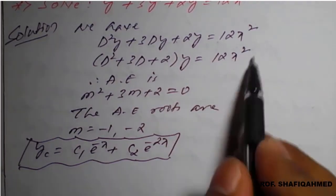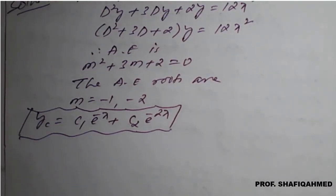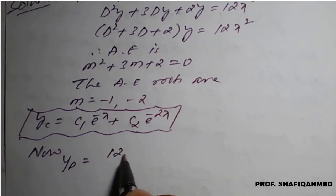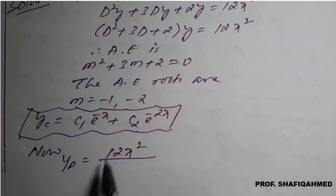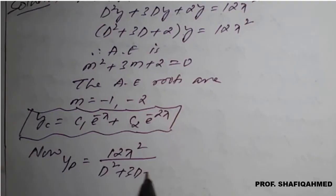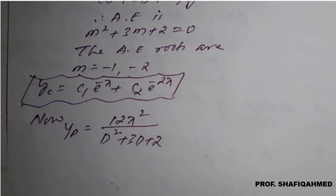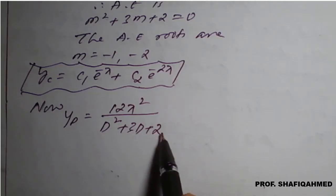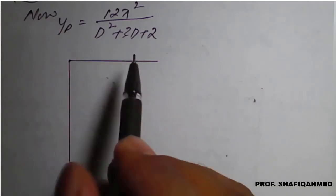Now, using the right-hand side 12x square, we are going to find the particular integral. yp is equal to 12x square divided by d-square plus 3d plus 2. We will obtain yp by dividing 12x square by d-square plus 3d plus 2 using the long division method.